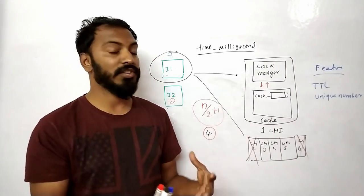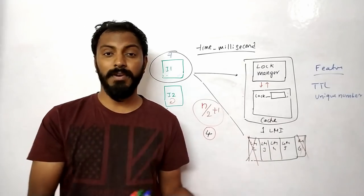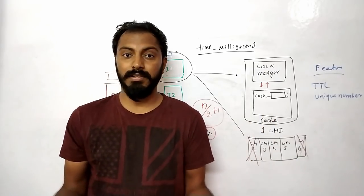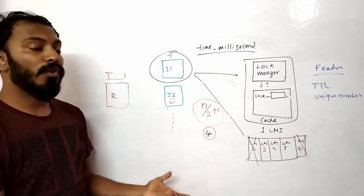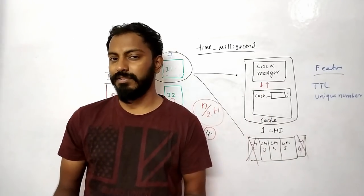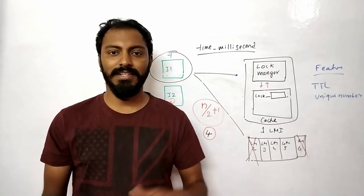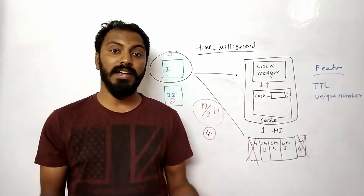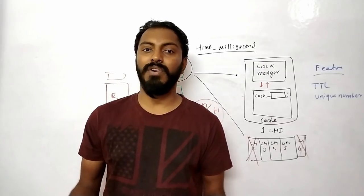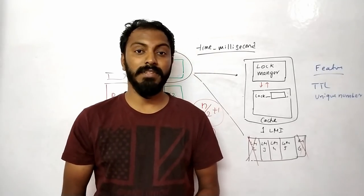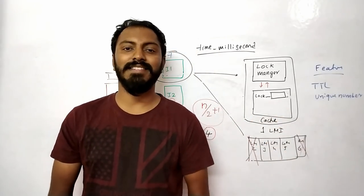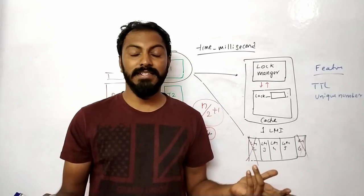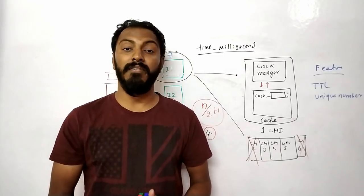This is the high-level idea of how to develop distributed locks. There are many different algorithms — Chubby by Google and many others. This is one way to tackle the problem. There are also libraries available from Redis itself called Redlock, which you can try. If you like the video, please like and subscribe to the channel, share it with your friends, and leave suggestions in the comments. Thank you.